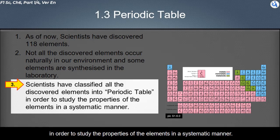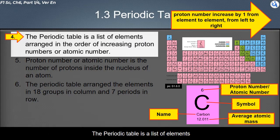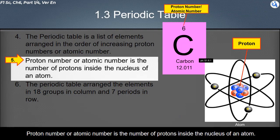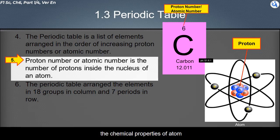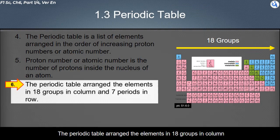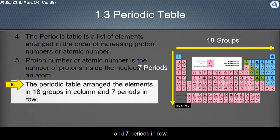Scientists have classified all the discovered elements into the periodic table in order to study the properties of elements in a systematic manner. The periodic table is a list of elements arranged in order of increasing proton number, also called atomic number. Proton number is called atomic number because the proton number determines the chemical properties of an atom, and these chemical properties determine the type of the atom.